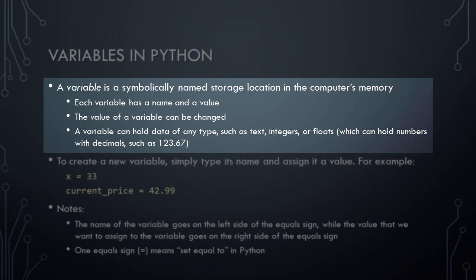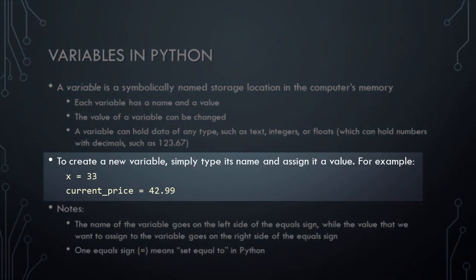Variables in Python can hold data of any type, such as text, integers, or floats, which you can think of as numbers with decimals, such as 123.67. To create a new variable in Python, we simply type its name and assign it a value. In this first example, we're declaring a variable named x and assigning it a value of 33.